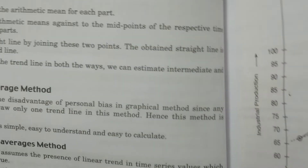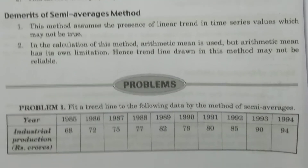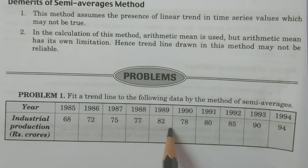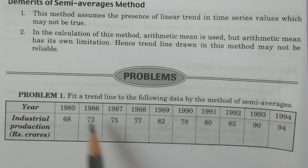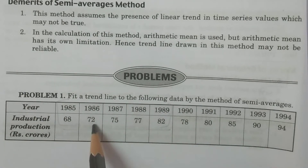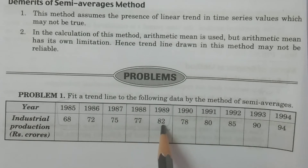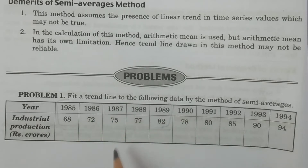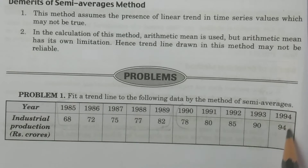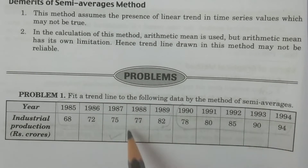You have to calculate the arithmetic mean of the first part: the values 68, 72, 75, 77, 85 divided by 5 — because there are 5 periods. Similarly, the arithmetic mean is to be calculated for 1990 to 1994 for the second part. For these two parts you calculate the arithmetic means.